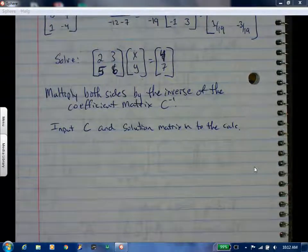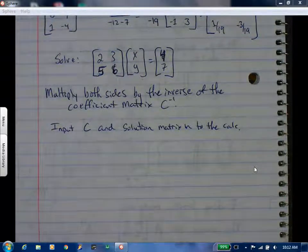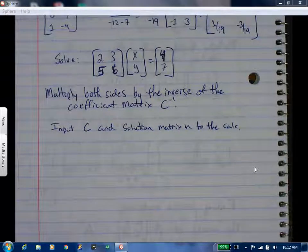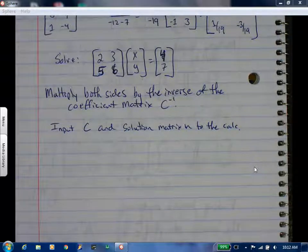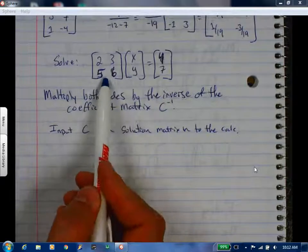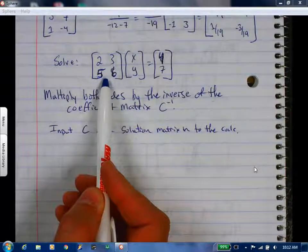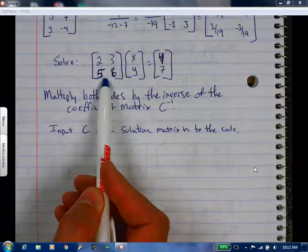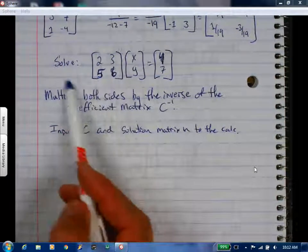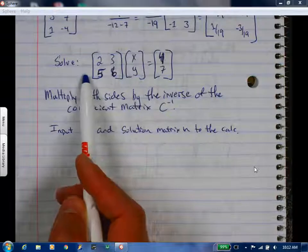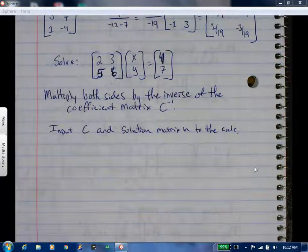We're going to input the solution matrix into our calculator. We're going to do these on the calculator. Now if I do an inverse matrix on the left side, do I actually need to multiply that out? On this left side, we're actually not going to do anything. Because if it's a correct inverse, it should equal the identity matrix.